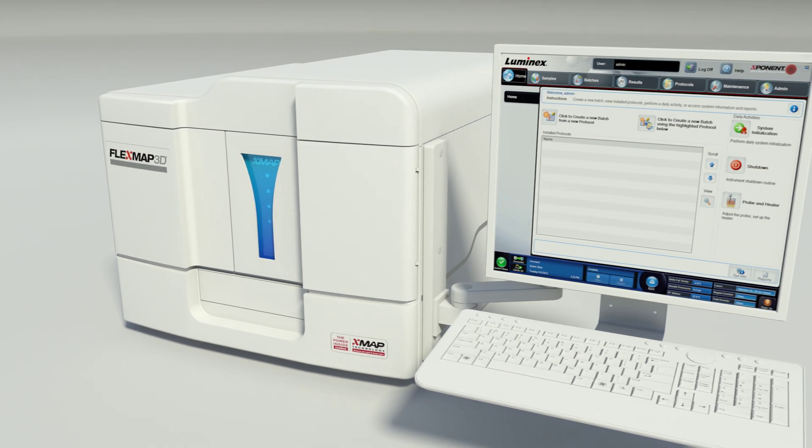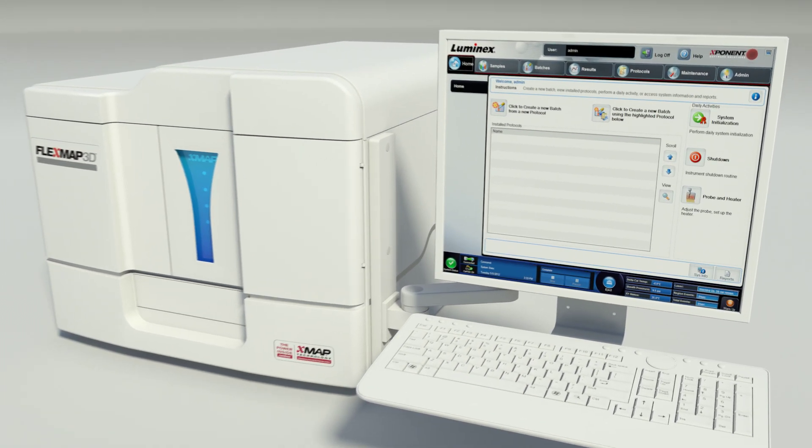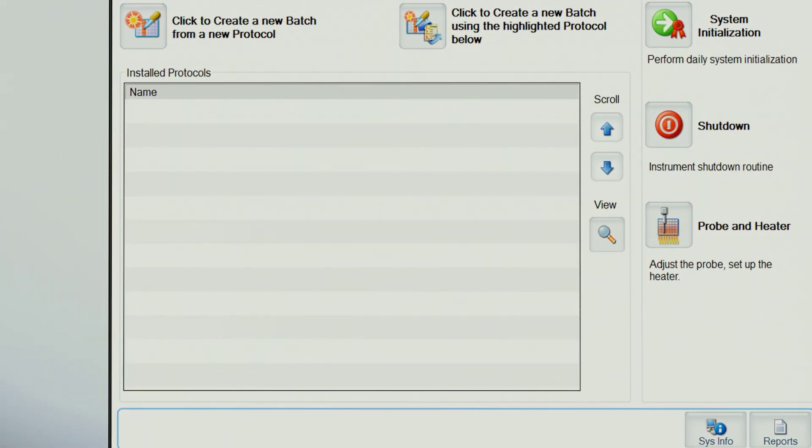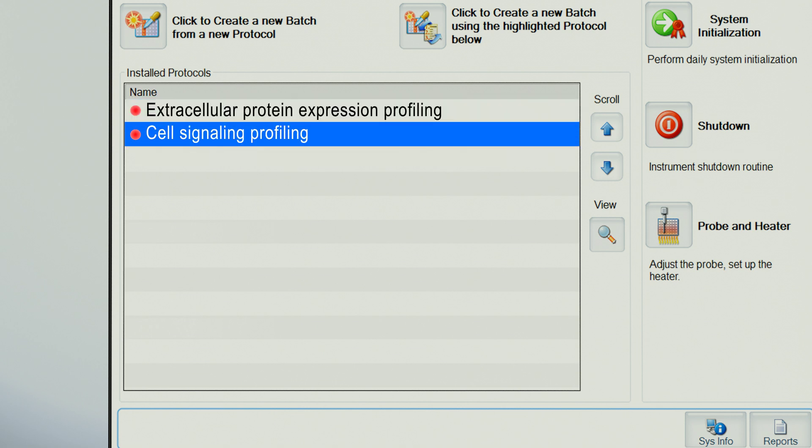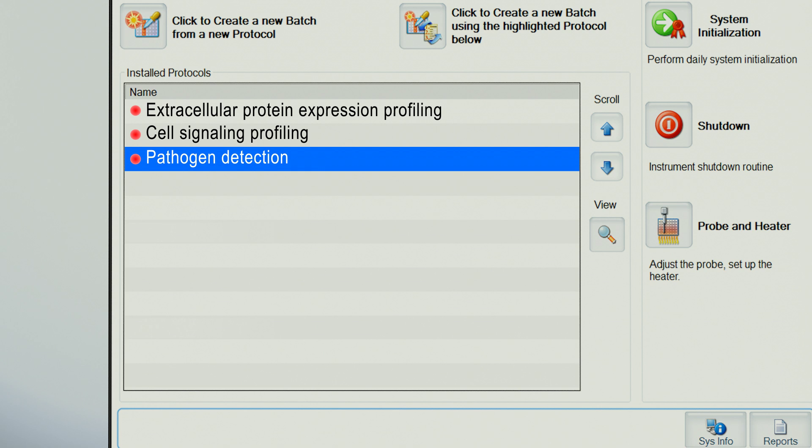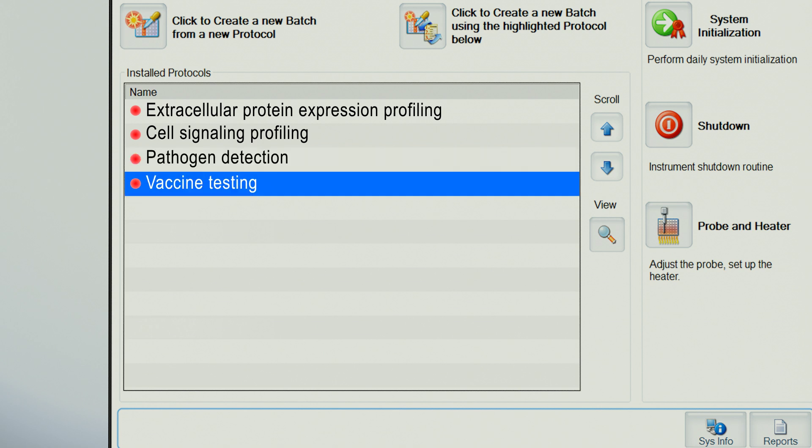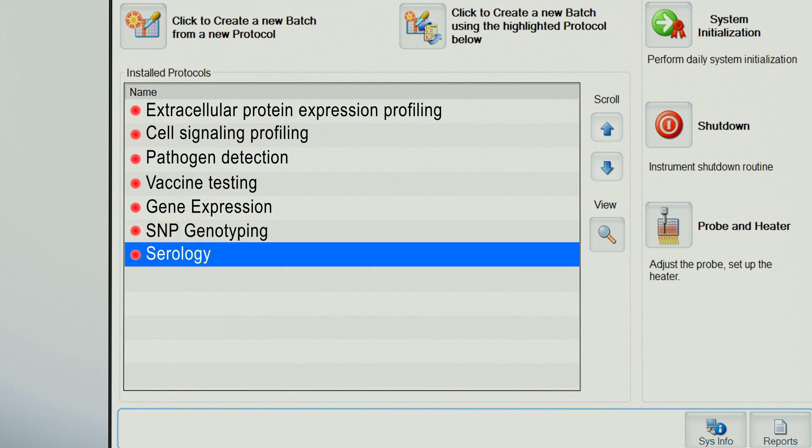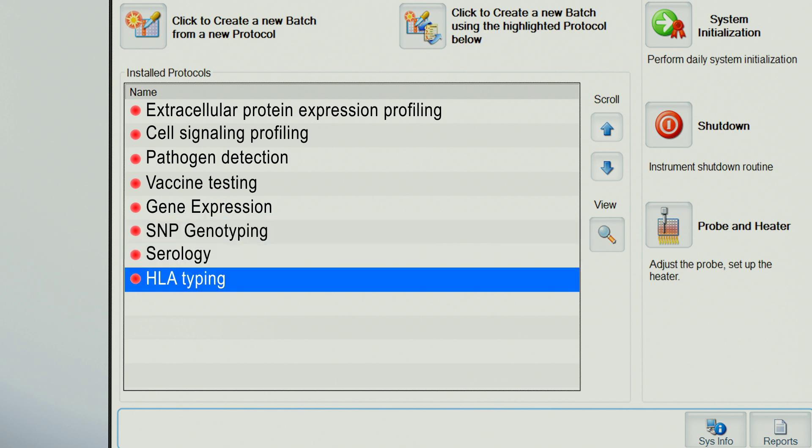The FlexMap 3D is used in a wide variety of applications including extracellular protein expression profiling, cell signaling profiling, pathogen detection, vaccine testing, gene expression, SNP genotyping, serology, and HLA typing.